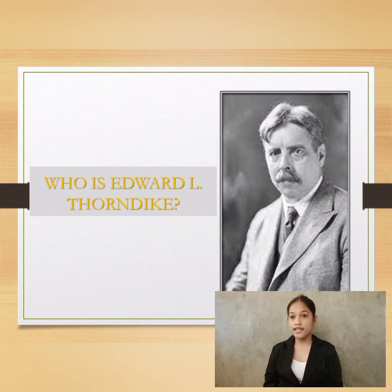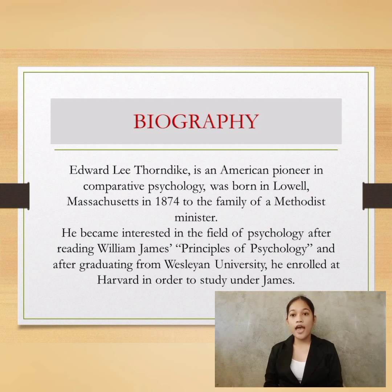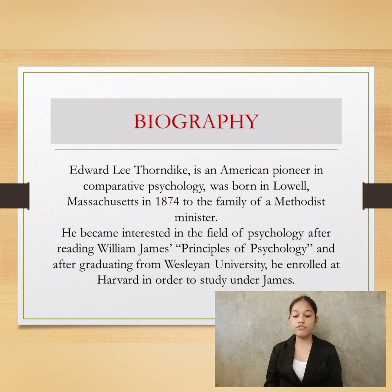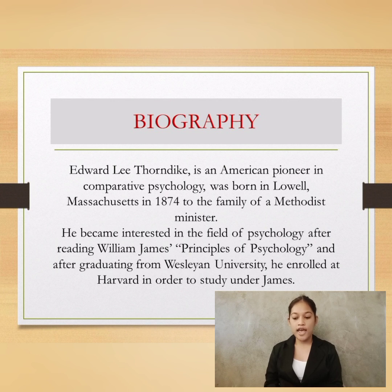But first let's talk about who is Edward L. Thorndike. Edward Lee Thorndike is an American pioneer in comparative psychology, was born in Lowell, Massachusetts in 1874 to the family of a Methodist minister. He became interested in the field of psychology after reading William James' Principles of Psychology, and after graduating from Wesleyan University, he enrolled at Harvard in order to study under James.